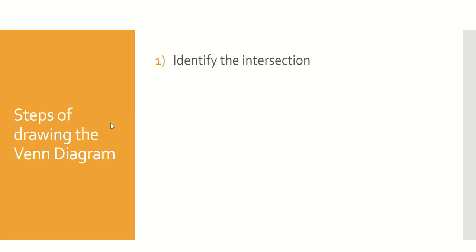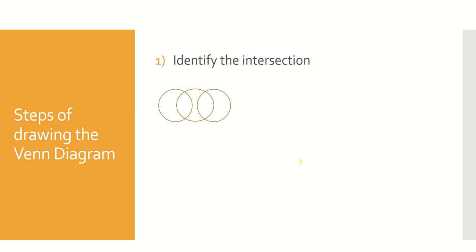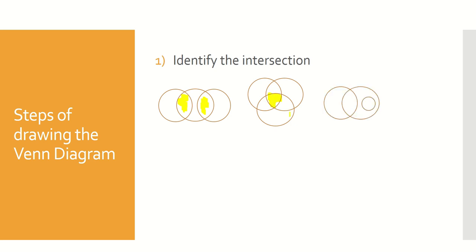To draw the Venn diagram, there are four important steps. First is to identify the intersection — you have to know whether the intersection is between two sets or three sets. For example, the intersection between two sets involves two parts. When it comes to the intersection of three sets, if the three sets intersect together, you can see the intersecting area in the middle. The last type is the intersection between a subset and a set.